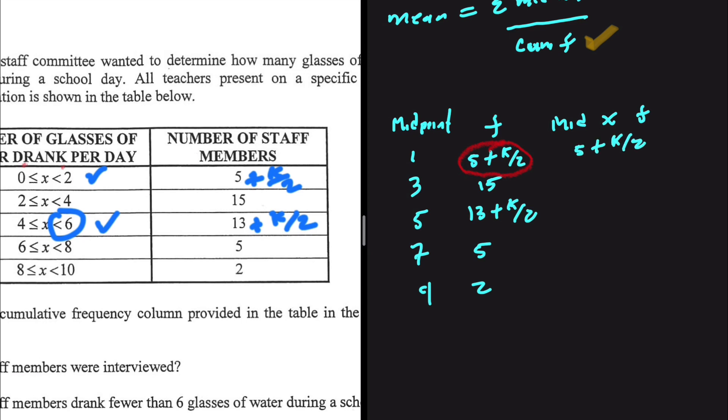3 multiply by 15 that's 45, and then what is 13 multiplied by 5? Let me just put that in my calculator real quick. So I have 65. I have 65 plus k divided by 2 multiplied by 5, so I have 5k divided by 2. 7 multiplied by 5 is 35, and then 9 multiplied by 2 obviously is 18.